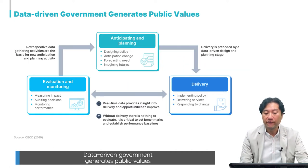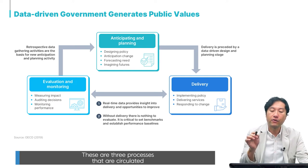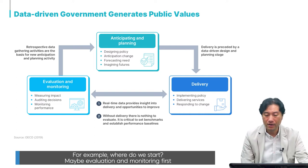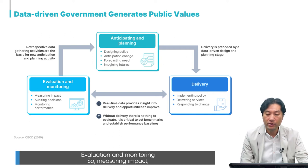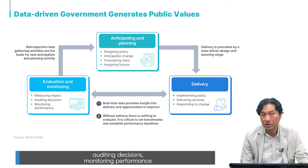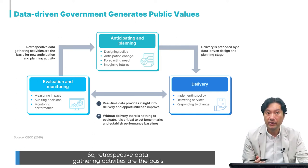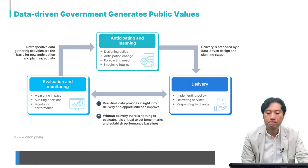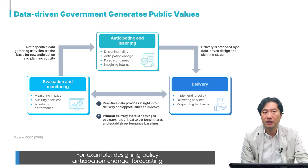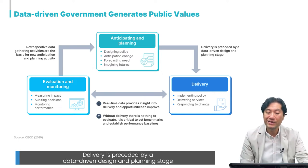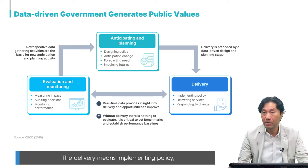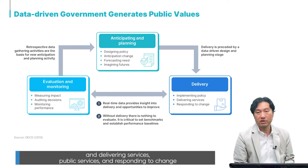These three processes circulate. Starting with evaluation and monitoring — measuring impact, auditing decisions, monitoring performance — retrospective data-gathering activities form the basis for anticipation and planning, which includes designing policy, anticipating change, forecasting, and imagining futures. That planning then impacts delivery: implementing policy, delivering public services, and responding to change.